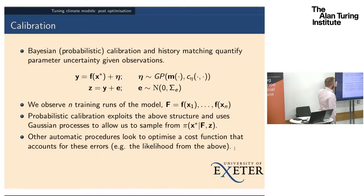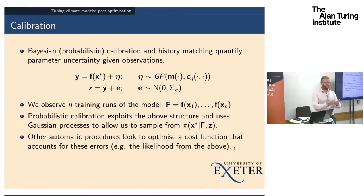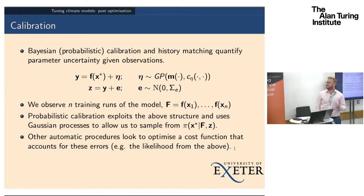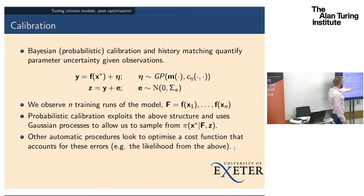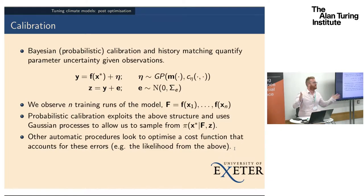We've heard a little bit about Bayesian calibration and history matching. The idea is that the climate has some contribution from the climate model at its best parameters, and then there's a model discrepancy. You have some observations of the climate — these would normally be partial, so there should probably be an incidence matrix in front of Y. You observe those observations with error. Calibration allows you to infer the posterior distribution of X star. In the climate tuning literature, there are lots of automatic procedures that put a cost function like a square distance and then try to optimize — so calibration is treated as an optimization problem.